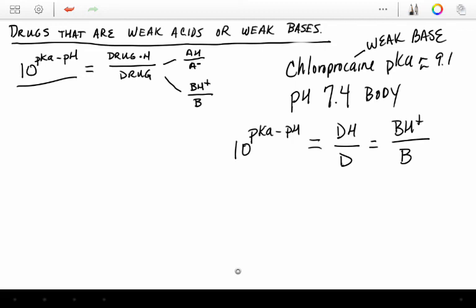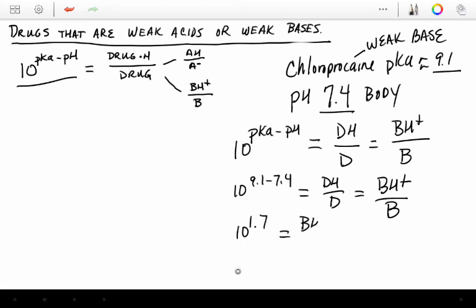So if we say 10 to the 9.1 minus 7.4 is going to equal the ratio of drug that is bound to hydrogen over the drug that is not bound to hydrogen. And in this case, since it's a weak base, the drug bound to hydrogen is charged, and the drug not bound to hydrogen is not charged. So 10 to the 1.7 power will equal our base bound to hydrogen over our base that is not bound to hydrogen.